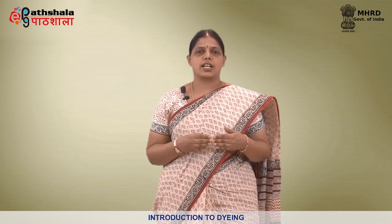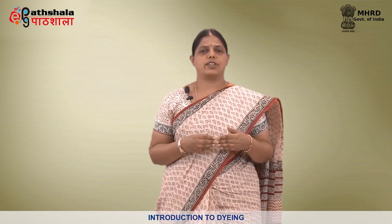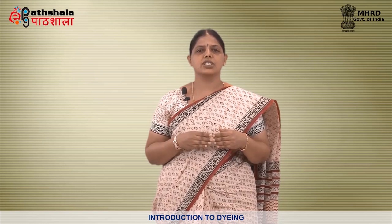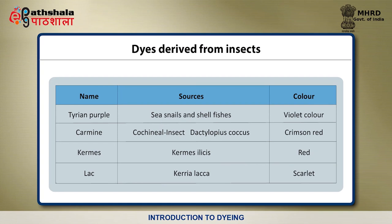The second sub-classification under natural dyes is from animal origin. Insects were the main source of natural dyes of animal origin and most of these provided red colors. The most highly prized ancient dyestuff was the so-called Tyrian purple, obtained from the juices of certain species of snails found in the waters of the Mediterranean sea. The carmine dye is from cochineal insect which gives crimson red. The Kerms dye is from Kermes ilicis which gives red. The Lac dye is extracted from Kerria lacca which gives scarlet.